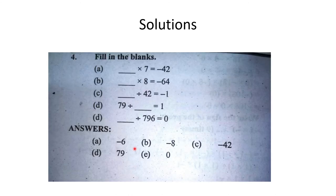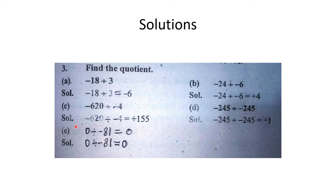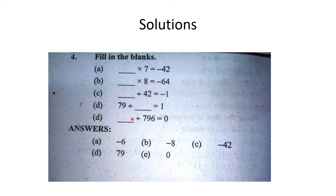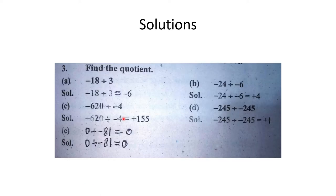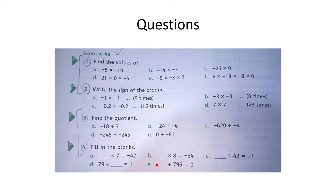Aakhri part E: 796 hai aur answer 0 chahiye. Jaise Q3 E part mein 0 ko minus 81 par divide kiya to answer 0 aaya, usi tarah 0 ko 796 par divide karein to answer 0 aayega. Yahan aapne 0 likhna hai.